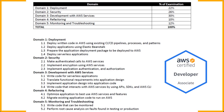The AWS Certified Developer Associate DVA-C01 examination is basically a pass or fail exam. The exam is scored against the minimum standard established by AWS professionals, guided by certification industry best practices and guidelines. The score ranges from 100 to 1000, with a minimum passing score of 720. Your score shows how you performed on the exam as a whole and whether or not you passed.